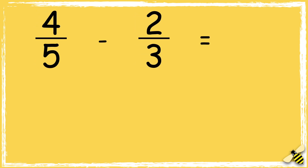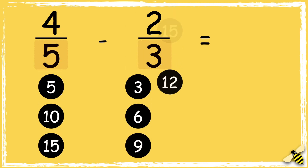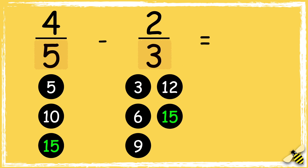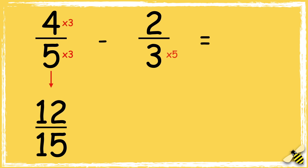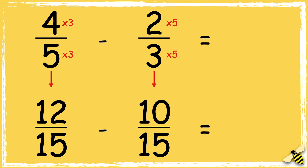Let's have a look at one more: 4/5 take away 2/3. We need to find a common denominator, so let's look at the multiples of 5 and 3. 15 is the lowest common multiple, so I can make both the denominators 15. We need to multiply 5 by 3 to get 15, so we also need to multiply the numerator by 3. 4 times 3 is 12. Now I need to multiply 3 by 5 to get 15, so we also need to multiply the numerator by 5. 2 times 5 is 10.